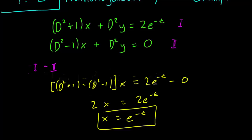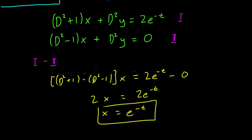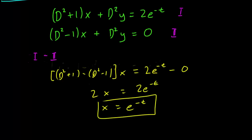So let's try to figure out how to get the y equation by eliminating x. You can see that the first equation has D squared plus 1 by the x, and the second equation is D squared minus 1. So we need to multiply the first equation by D squared minus 1, so D squared minus 1 times the first equation and we subtract that with D squared plus 1 times the second equation.